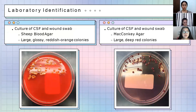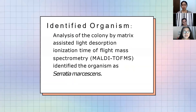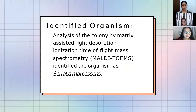Our second and third photos show cultures of CSF and wound swab on sheep blood agar and MacConkey agar. On sheep blood agar, the colonies appear large, glossy, and reddish-orange, while on MacConkey agar they appear as large, deep red colonies. The colonies were then analyzed using Matrix-Assisted Laser Desorption Ionization Time-of-Flight Mass Spectrometry, or MALDI-TOF MS. In this method, the analyzer separates molecules from the sample based on the time each takes to fly through the time-of-flight tube to the detector. The ionized sample molecules are accelerated by a high-voltage current and fly through the tube before striking the detector.